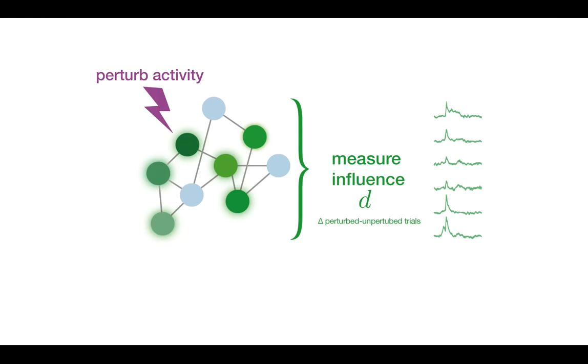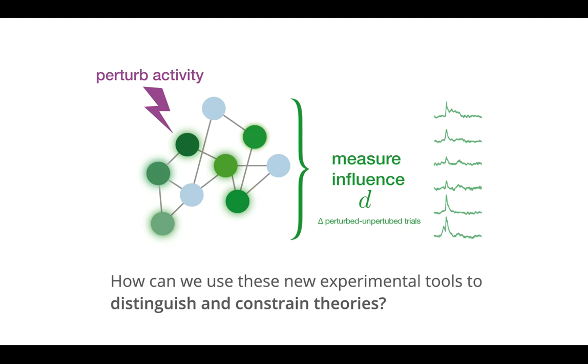New optogenetic tools have been developed for manipulating the activity of functionally defined individual neurons in the mouse brain in vivo, with tight spatial and temporal precision. We want to know how exactly can we use these new experimental capabilities to distinguish and constrain theories of neural computation?